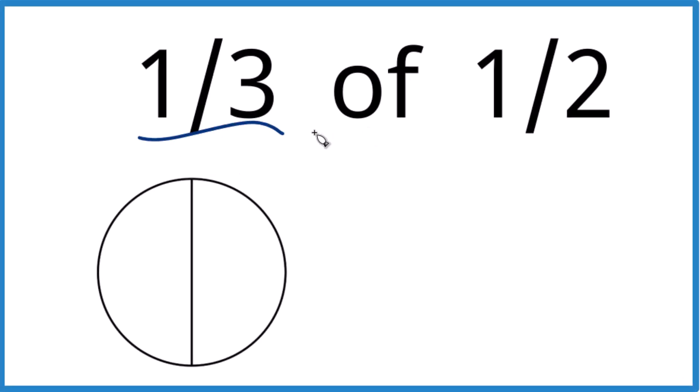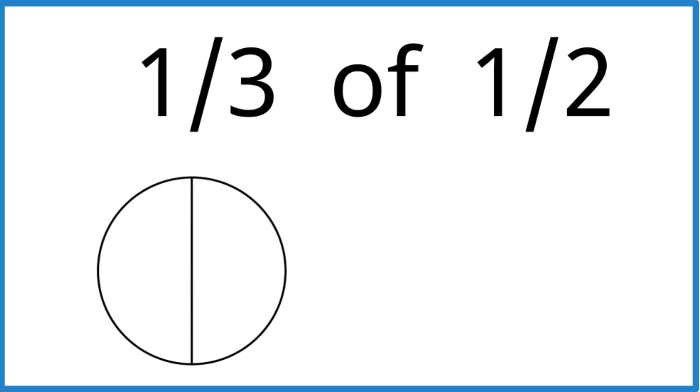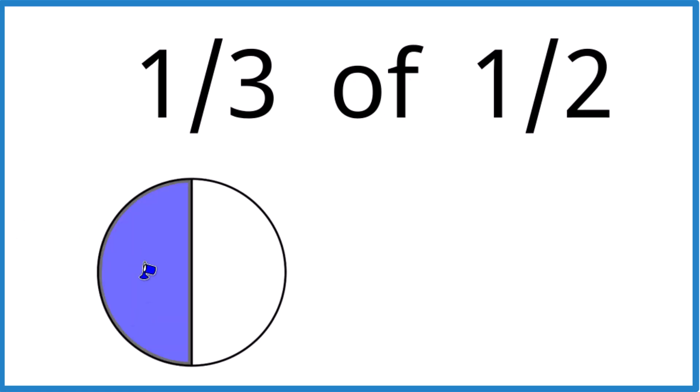So let's find one third of one half. How do you do that? First off, we have a full circle here, and it's divided into two halves. So let's just take and color one in. There's one half right there.